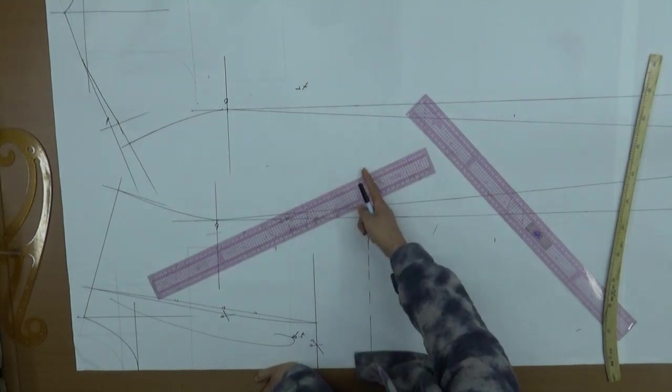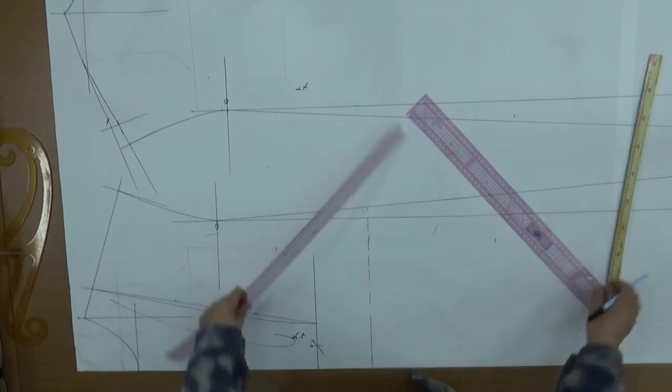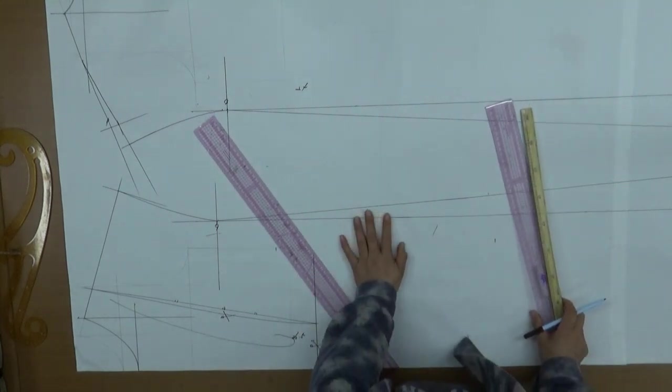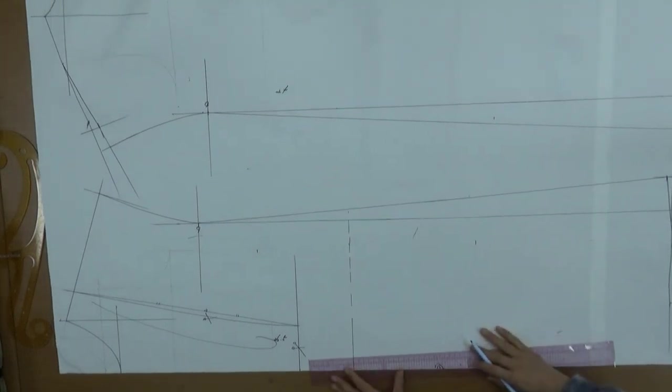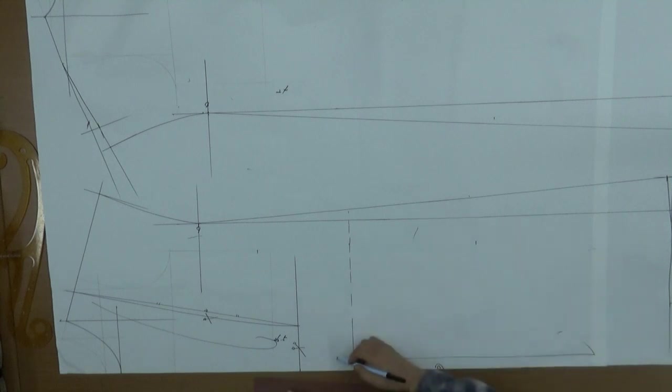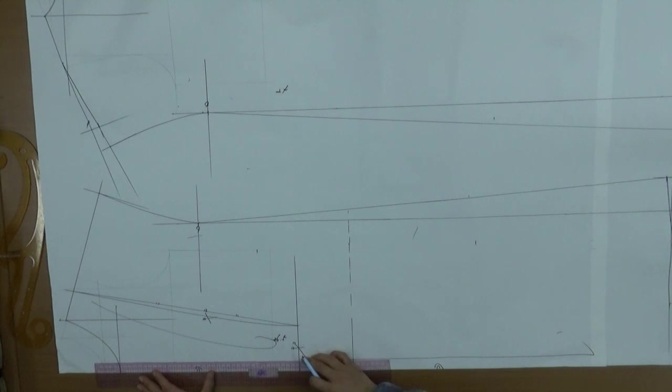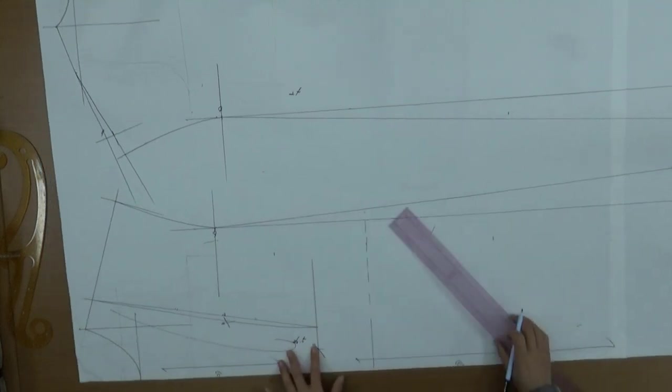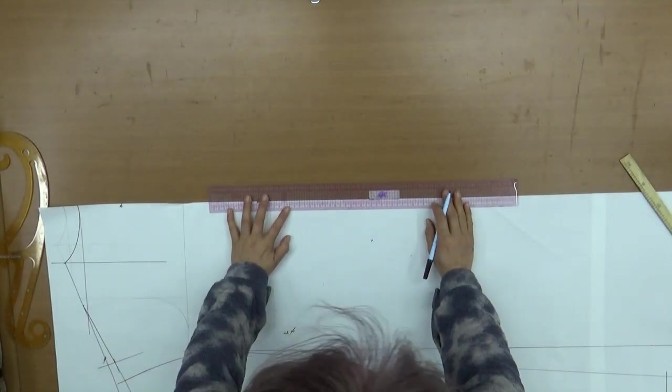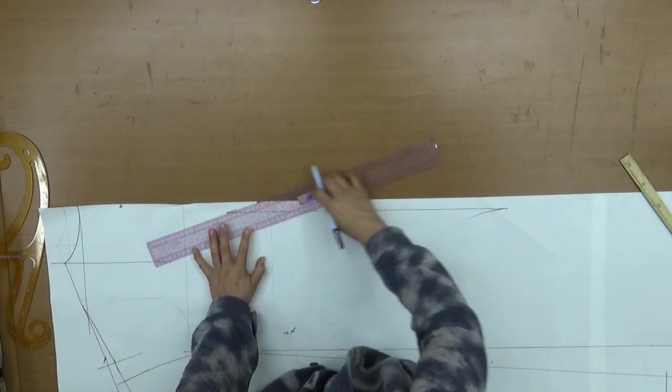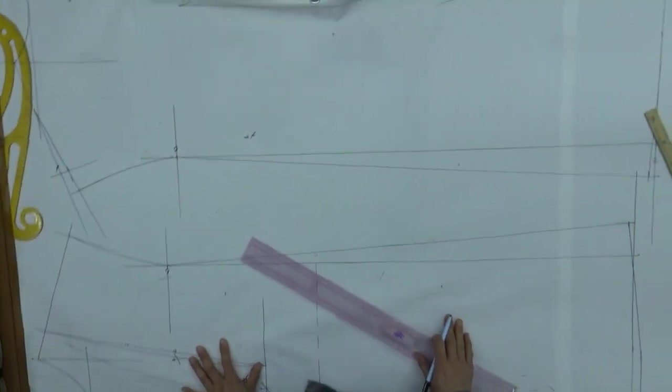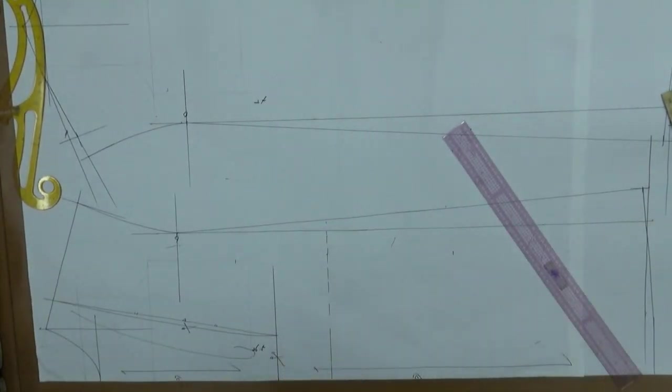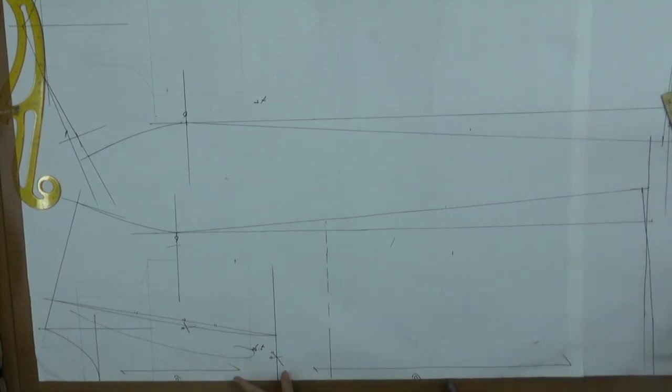Then at the bottom, I'll lower 3cm. For the neck opening, do it however you're comfortable. Like this, then I drew it like this. Got it? Then extend the sleeve. From the shoulder point, lower 17cm. Like this. Then connect with this line. It might draw as a straight line.